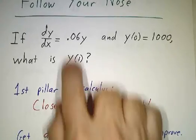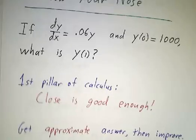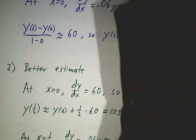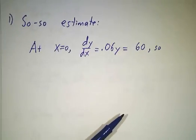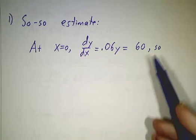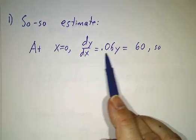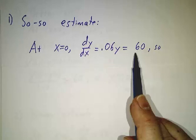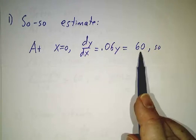So if the rate of change is 0.06 times how much you have, you might say, we started off with a value of 1000, so the rate of change is 0.06 times 1000, which is 60. So if we're changing at rate 60, where are we going to be one second from now?